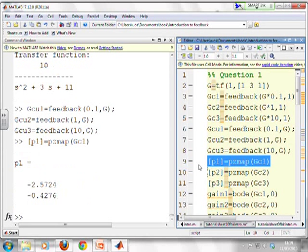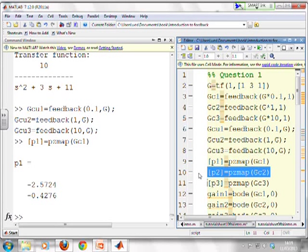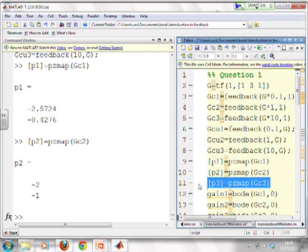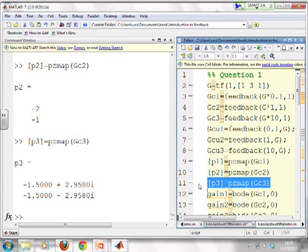So with K equals 0.1, there's your poles, minus 2.57, minus 0.42. You'll see what we said, a slow pole and a fast pole. What about with K2? Minus 1 and minus 2, as expected. And with K3, minus 1.5, plus and minus j 2.95. Again, you'll see the complex bit is quite large, as we expected.